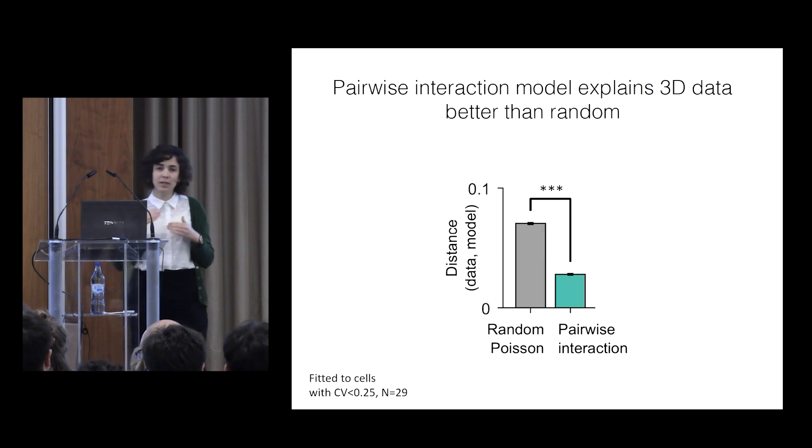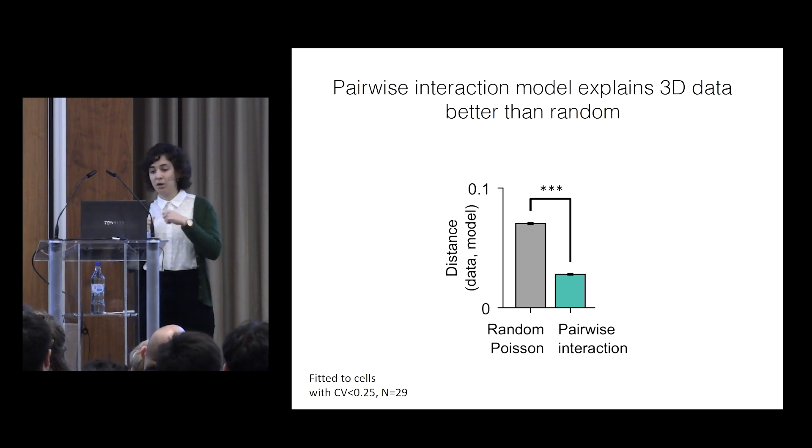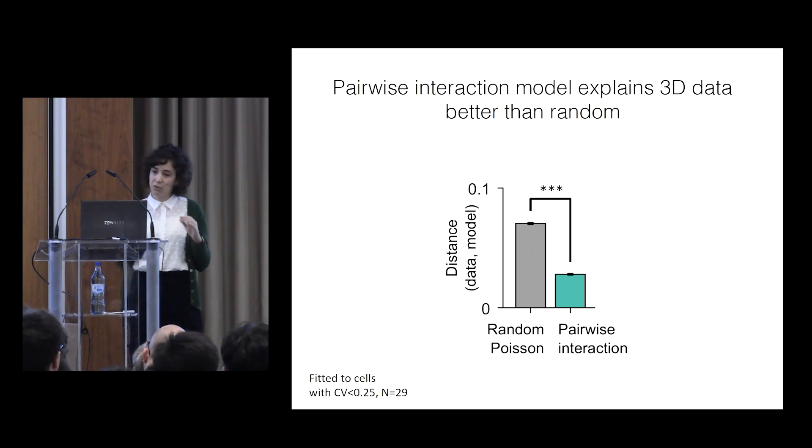Now, when we look at the distances between pairs of fields, and we do simulations using our pairwise interaction model, the simulations explain the data much better than simulations done with randomly arranged fields in space. So in 3D, our model works well.